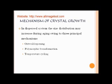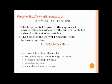In Ostwald ripening, the large particles grow at the expense of smaller ones. The smaller particles dissolve in the solution and re-precipitate on the larger particles, thereby increasing the size of the large particles. In the final stage, there will be only large particles in the solution and no small particles are present. The basis for Ostwald ripening is the equation: log(S/S₀) = 2γV / (R·r·T),